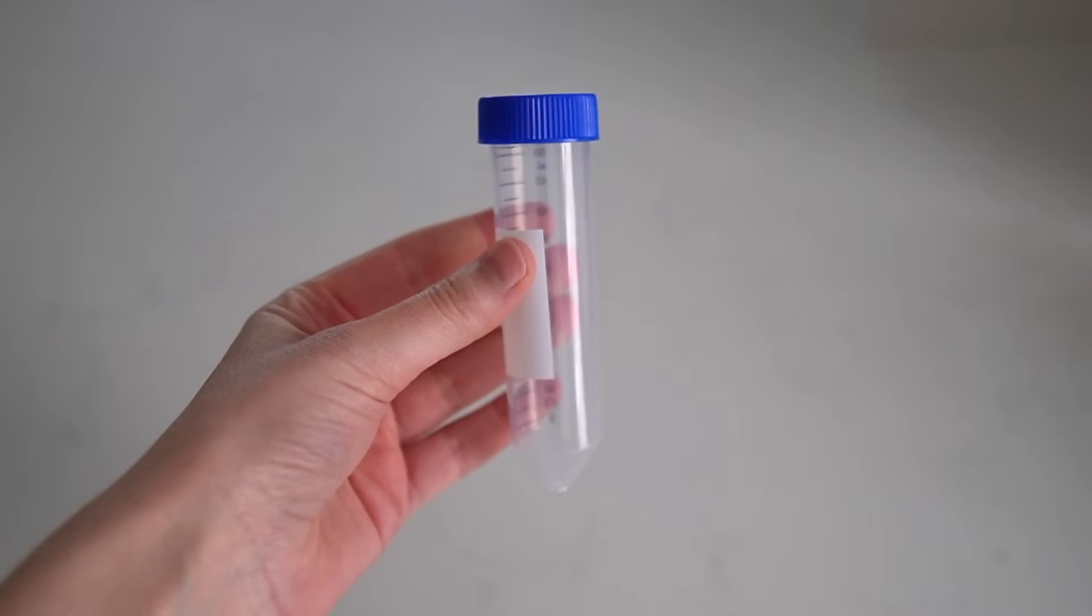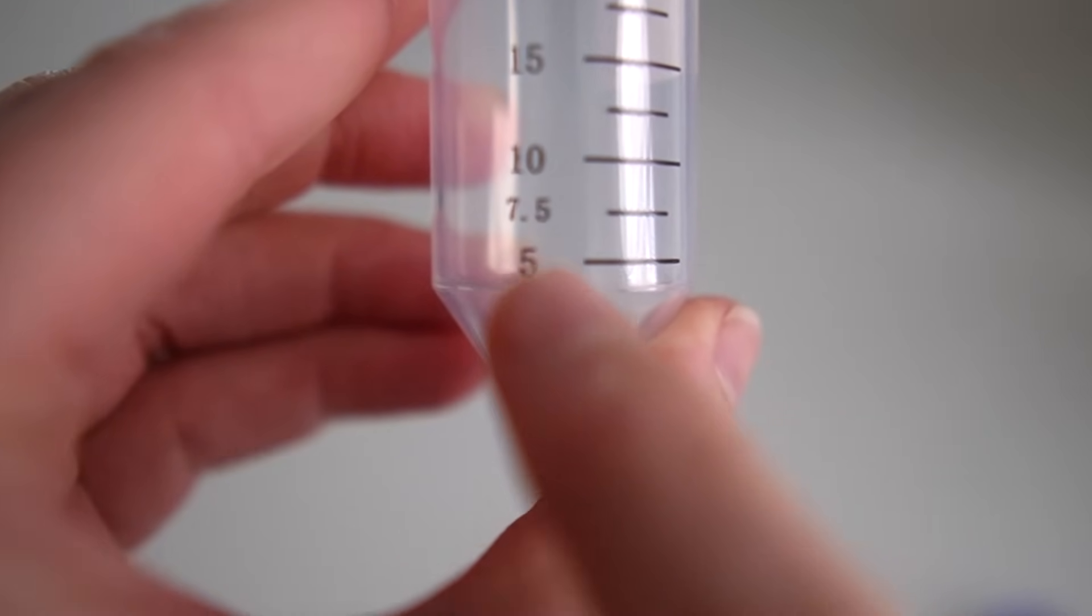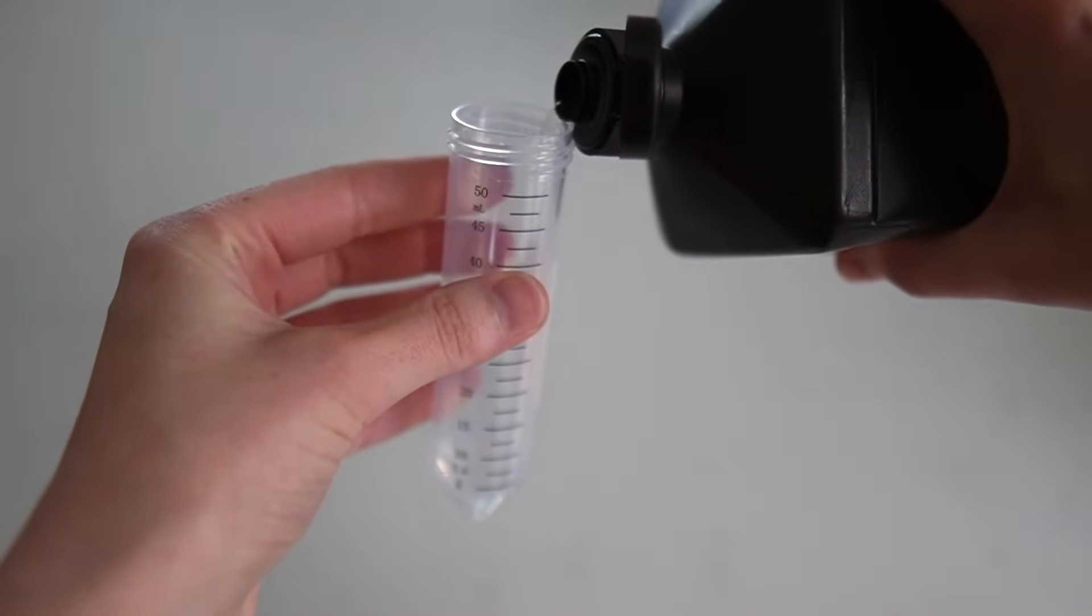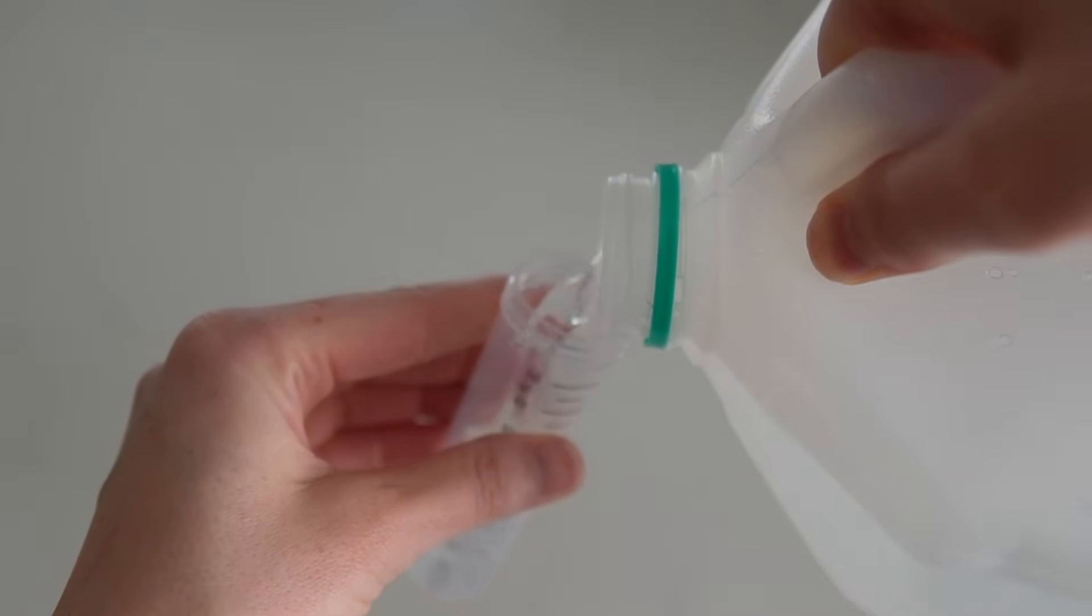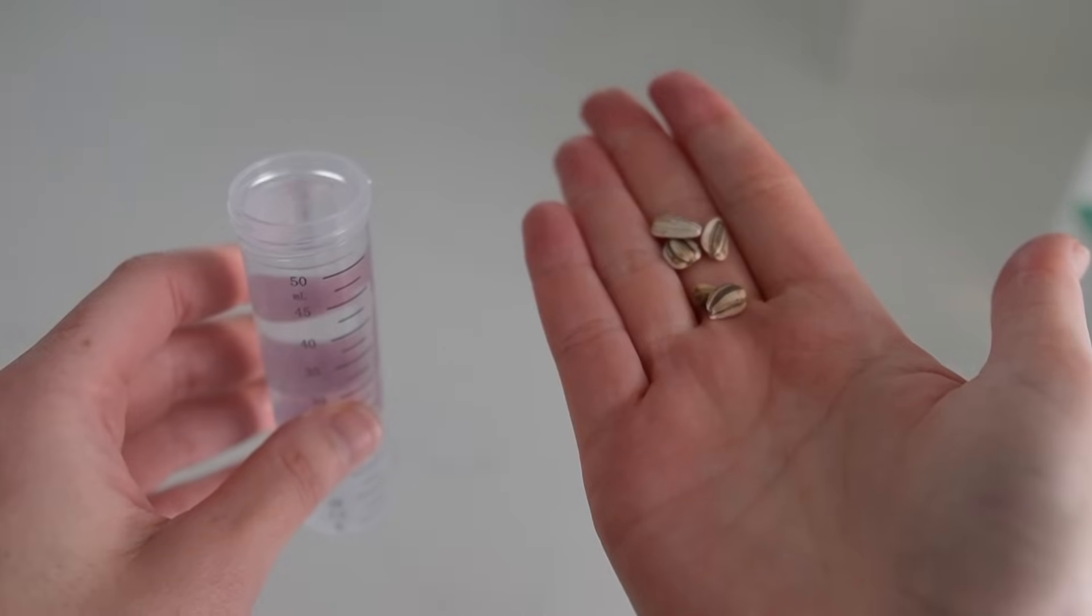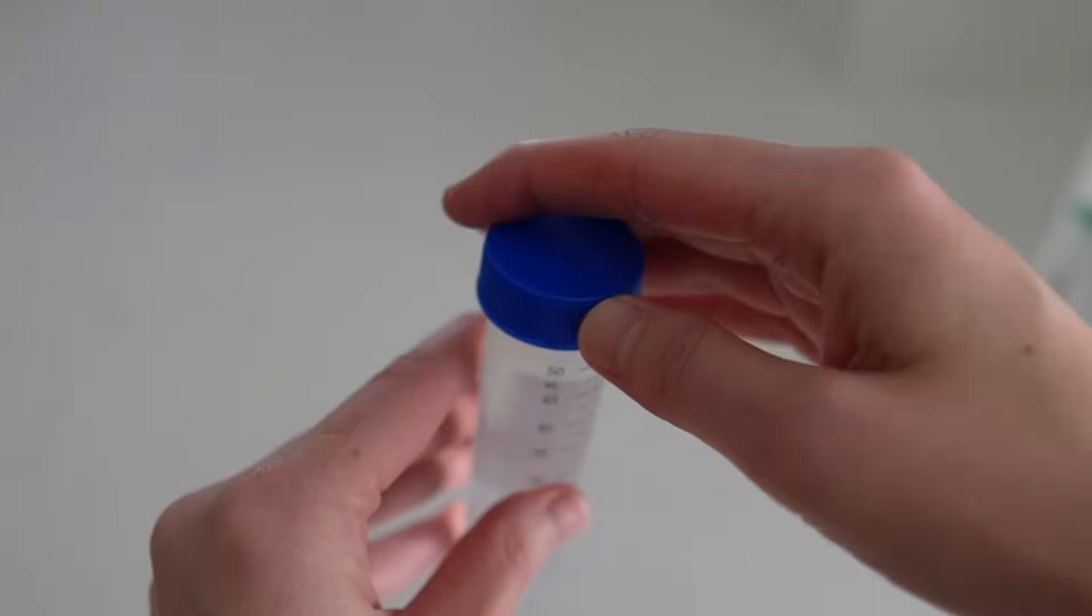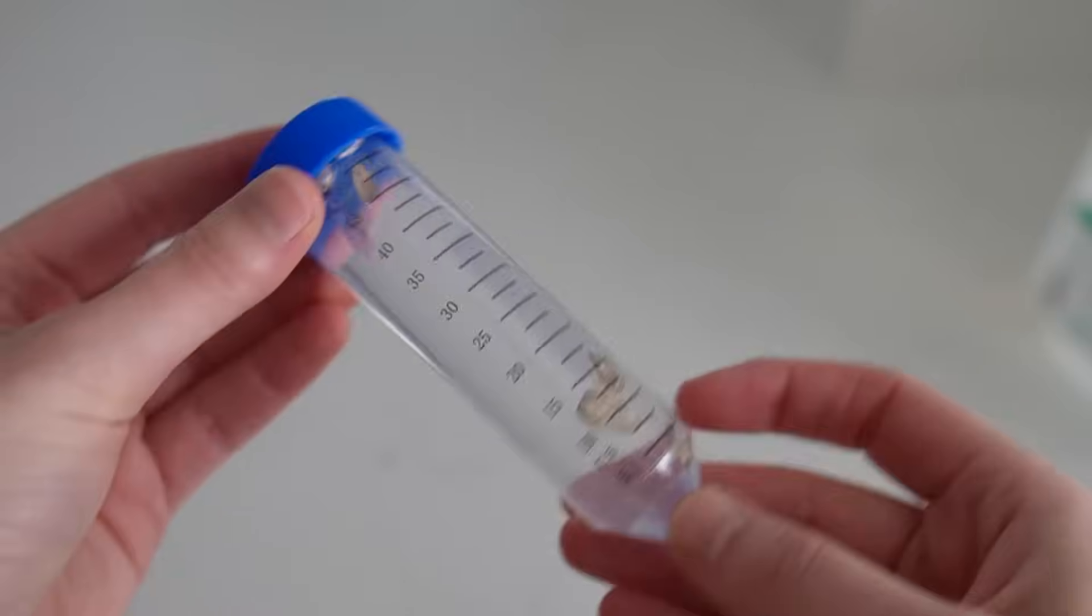In a 50 milliliter centrifuge tube, I add five milliliters of 3% hydrogen peroxide. Then I filled up the rest of the container with distilled water. After preparing the solution, just go ahead and add your seeds. Shake the tubes around a few times and then just forget about them for 24 to 48 hours.